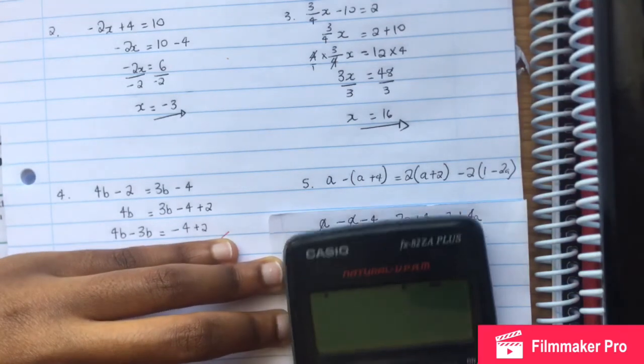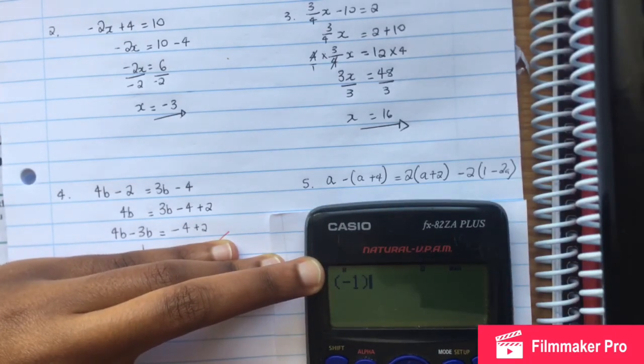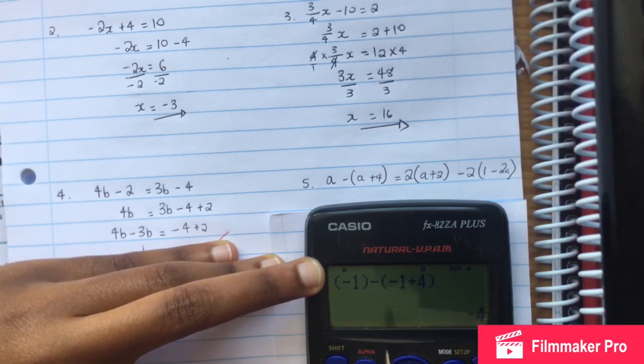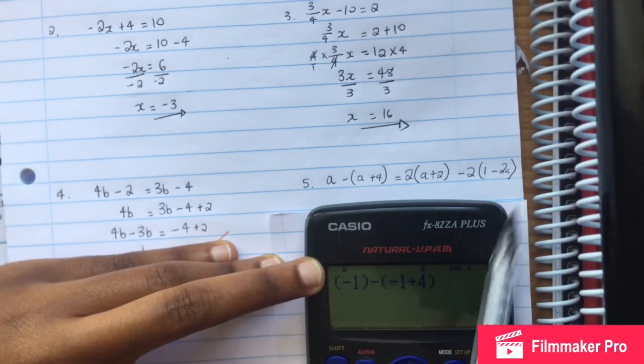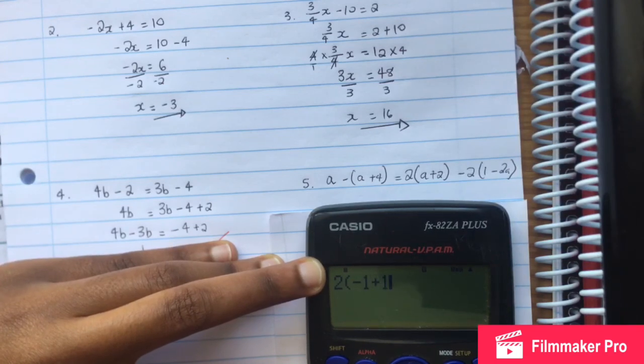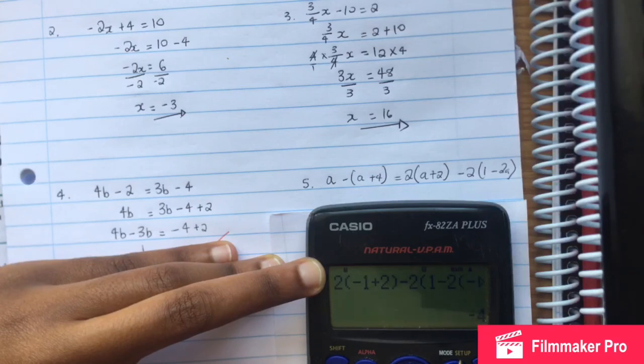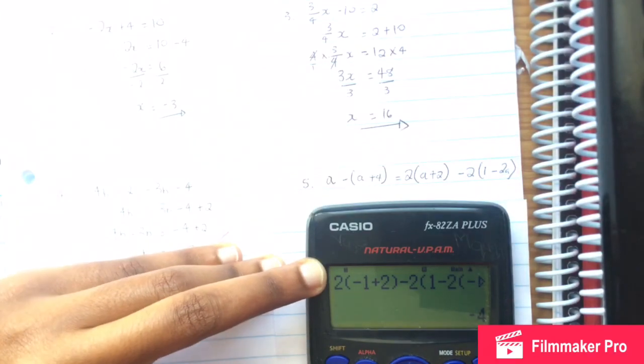Let's check again. We put a as negative 1. So negative bracket negative 1 plus 4 close bracket should equal negative 4 on the left hand side. On the right side we have 2 times negative 1 plus 2, plus 2, minus 2 bracket 1 minus 2 times negative 1 close bracket. This equals negative 4. Our answer is correct.